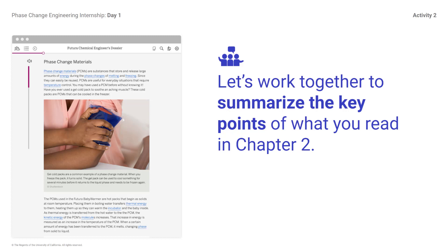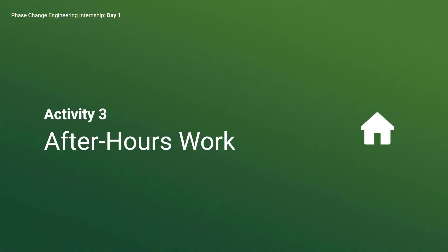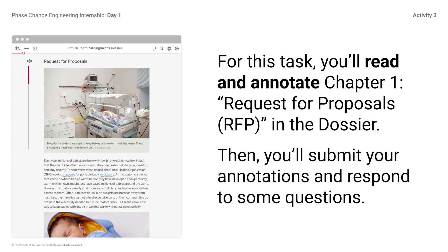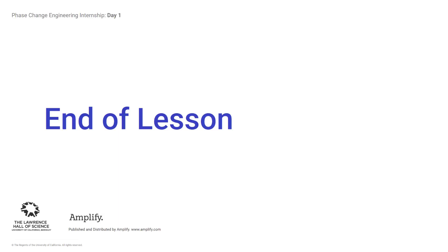Scientists and engineers read text multiple times for understanding. Students, be sure to answer the self-assessment questions in the activity and then select Hand In. Activity 3: After Hours Work. For this task, you'll read and annotate Chapter 1, Request for Proposals (RFP), in the dossier. Then you'll submit your annotations and respond to some questions. Students, complete the After Hours task. End of lesson.